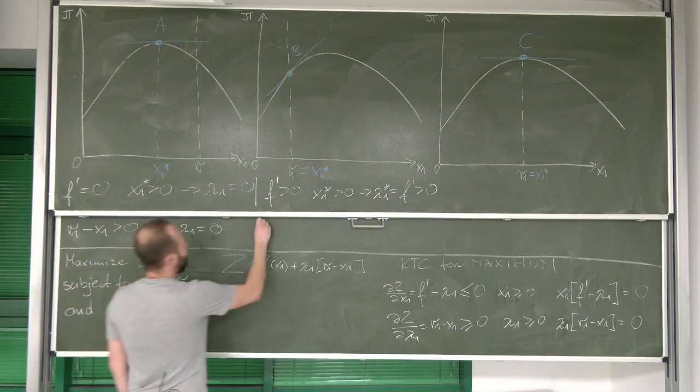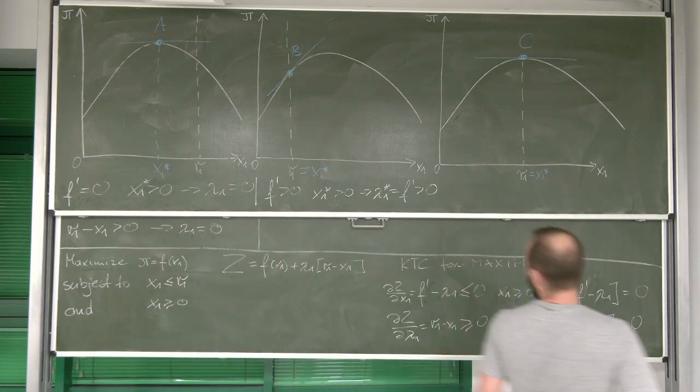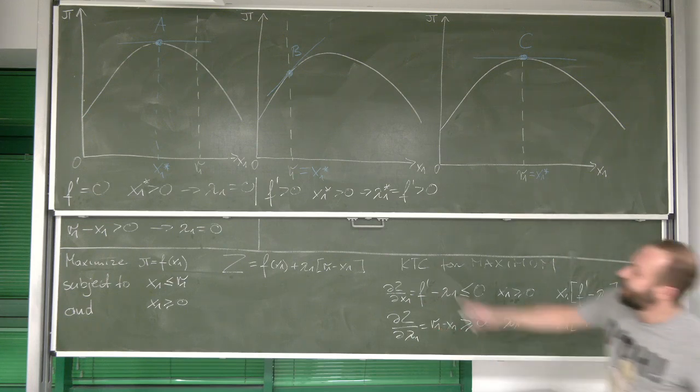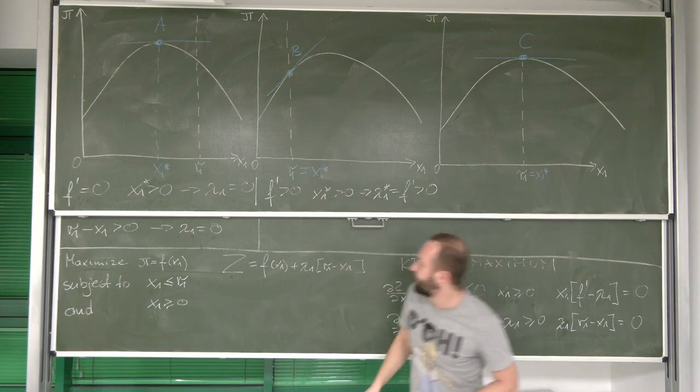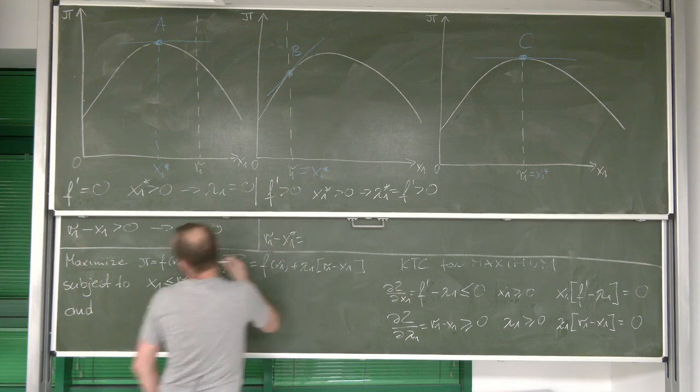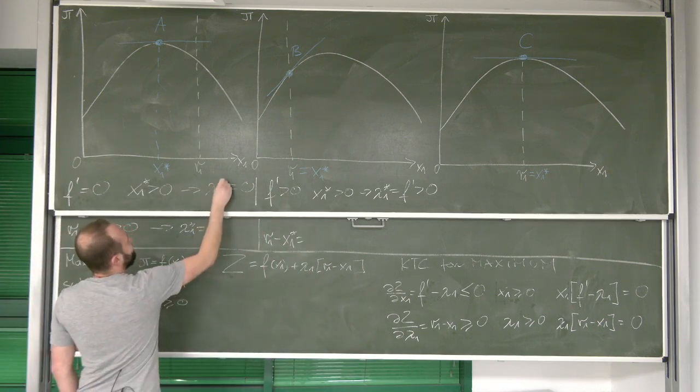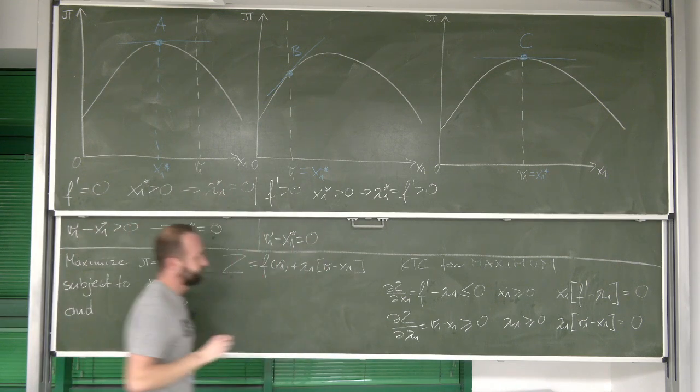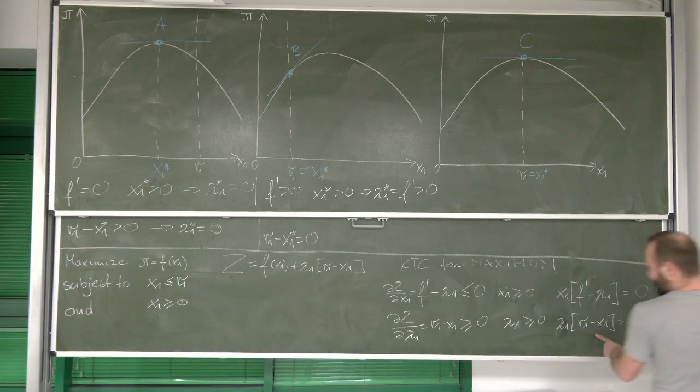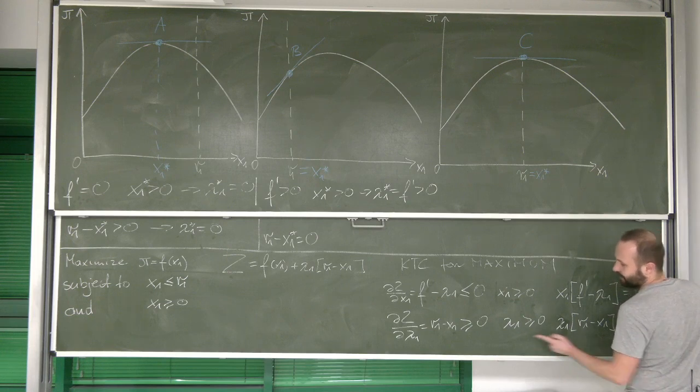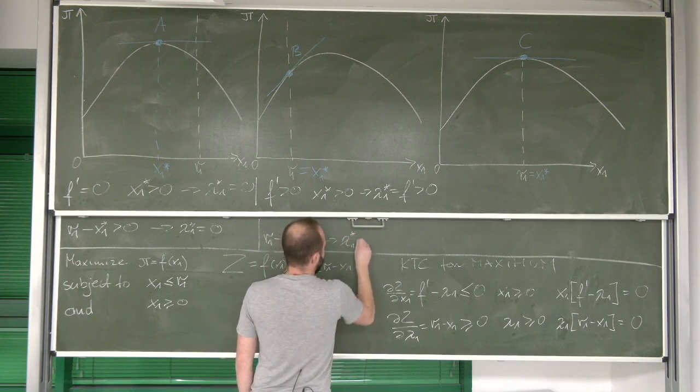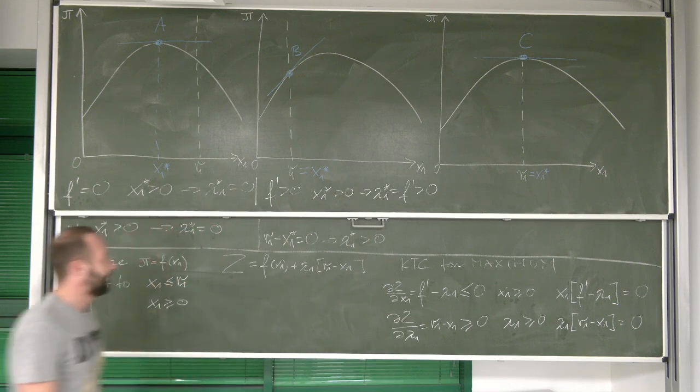Let's go one step further. What do we get from here? We know that actually r1 and x1 are exactly at the same point. Which means that r1 minus x1, maybe let's use asterisk here, is zero.